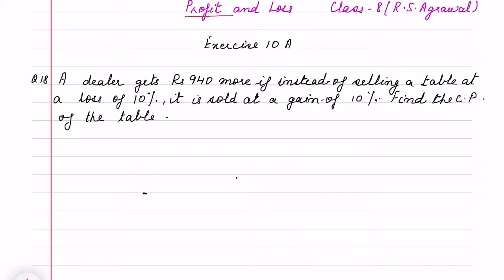Hello children, today I am taking questions of profit and loss from Class 8 RS Agrowal, Exercise 10A. The question is: A dealer gets 940 rupees more if instead of selling a table at a loss of 10%, it is sold at a gain of 10%. Find the cost price of the table.